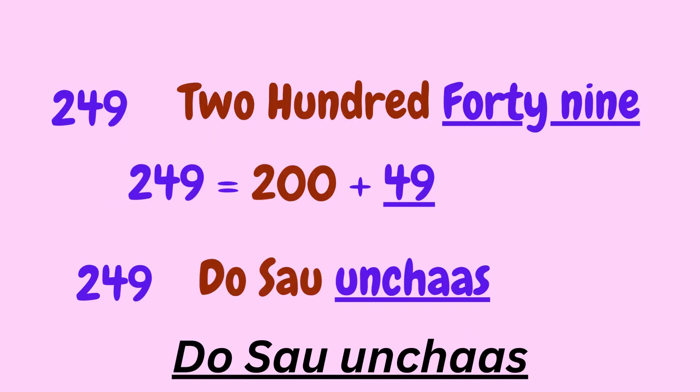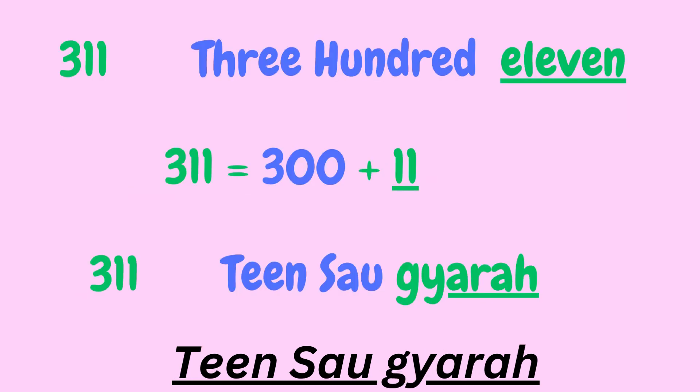Let's look at the number 249 — that is 200 plus 49. 200 is known as 'do saw' in Hindi and 49 is known as 'unchaas', so 249 will be known as 'do saw unchaas'. Let's take another number: 311, that is 300 plus 11. 300 is 'teen saw' and 11 is 'gyara', so it becomes 'teen saw gyara'.